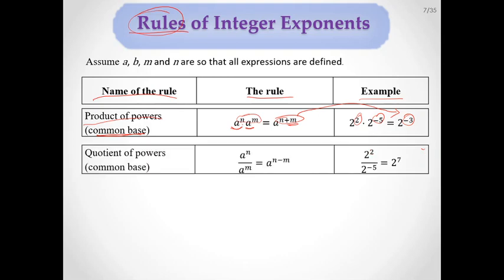The second rule is the quotient of powers with a common base: A to the M divided by A to the N equals A to the M minus N. For example, 2 squared divided by 2 to the negative 5th equals 2 to the 2 minus negative 5, which gives 2 to the 2 plus 5, equaling 2 to the 7th.